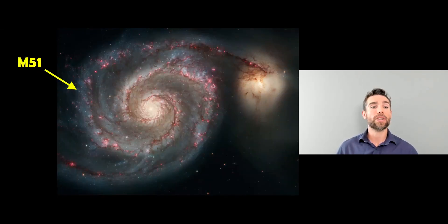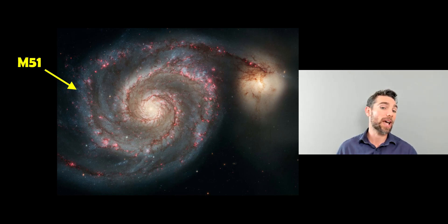And here's another example of a grand design galaxy. This is M51, the Whirlpool galaxy. And again, you can see, it's got very prominent spiral arms that go from the center part of the galaxy, all the way to the outer part. And they are generally unbroken. So again, another good example of a grand design galaxy.